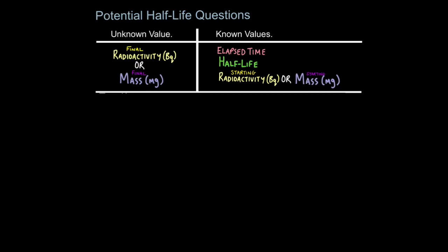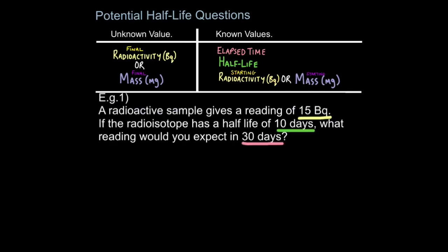Now, you need to be quite flexible in your ability to calculate half-life because they can test you in a number of ways. So, I'll give you some examples of this. It could be in a question that you have to work out the final radioactivity in becquerels or the final mass left of a radioisotope in a sample. And you will know the elapsed time, how much time has passed, the half-life, how long it is, and the starting radioactivity or the starting mass. For example, a radioactive sample gives a reading of 15 becquerels. If the radioisotope has a half-life of 10 days, what reading would you expect in 30 days?